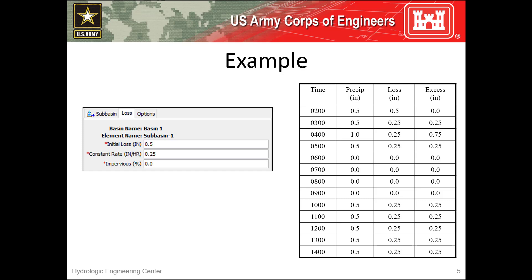This example shows how precipitation excess and loss is computed within this method. In the first time step, half an inch of precip is lost to initial losses. From there on out, precipitation is lost at a constant rate of 0.25 inches per hour. In the next time step, another half inch of precipitation falls — a quarter inch is lost to constant loss, and a quarter inch of excess is generated. In the next time step, one inch of precip falls, 0.25 inches of constant loss is applied, and 0.75 inches of excess is generated.